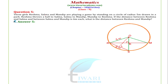Three girls — Reshma, Salma and Mandeep — are playing a game while standing on a circle of radius 5 metres drawn in a park. Reshma throws a ball to Salma, Salma to Mandeep, and Mandeep to Reshma. If the distance between Reshma and Salma, and between Salma and Mandeep, is 6 metres each, what is the distance between Reshma and Mandeep?